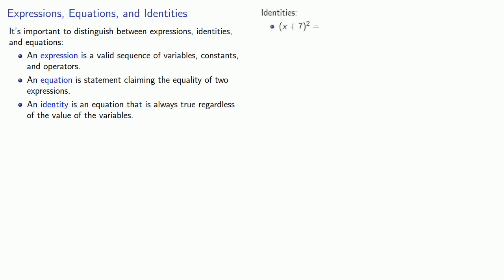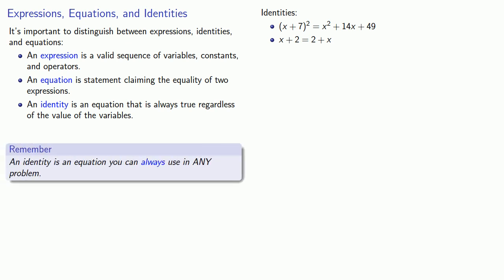So if I were to take x plus 7 and square it, I always get x squared plus 14x plus 49. And x plus 2 is always the same as 2 plus x. The wonderful thing about identities is that they are equations we can use in any problem.